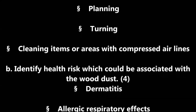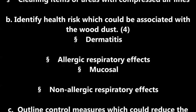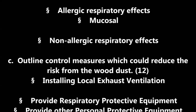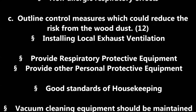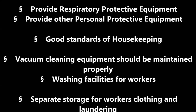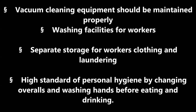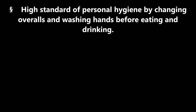Identify health risks which could be associated with wood dust. Dermatitis, allergic respiratory effects, mucosal effects, and non-allergic respiratory effects. Outline control measures which could reduce the risk from wood dust: installing local exhaust ventilation, providing respiratory protective equipment, providing other personal protective equipment, good standards of housekeeping, vacuum cleaning equipment should be maintained properly, washing facilities for workers, separate storage for workers' clothing and laundering, and high standards of personal hygiene by changing overalls and washing hands before eating and drinking.